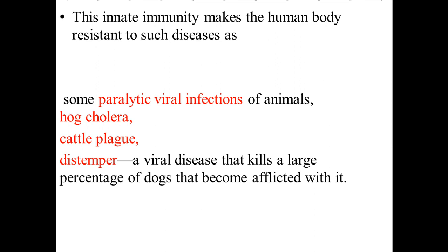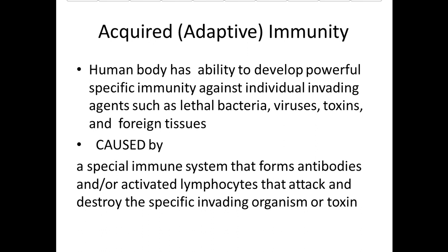Innate immunity makes the human body resistant to diseases such as some paralytic viral infections of animals, cholera of cattle, plague, and distemper. Acquired or adaptive immunity: the human body has the ability to develop powerful specific immunity against individual invading agents such as lethal bacteria, viruses, toxins, and foreign tissue.